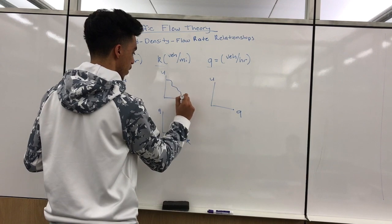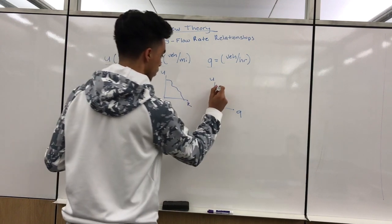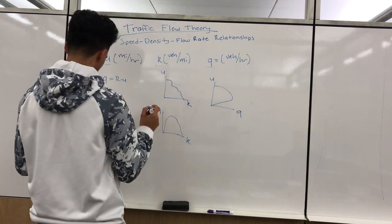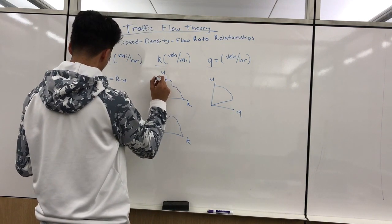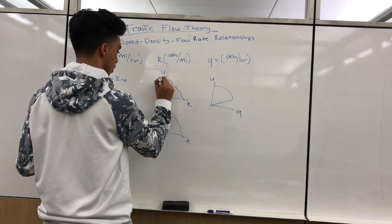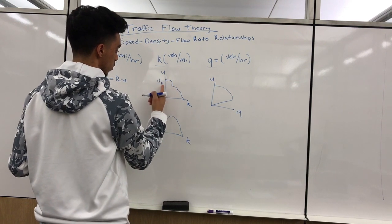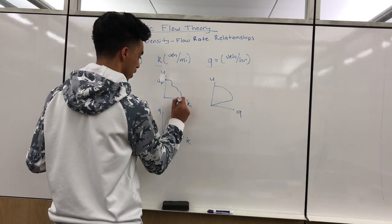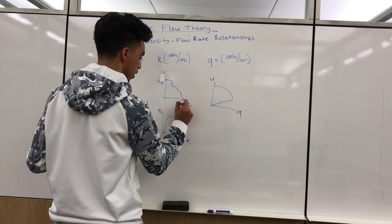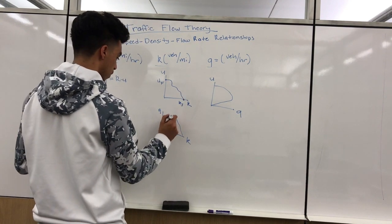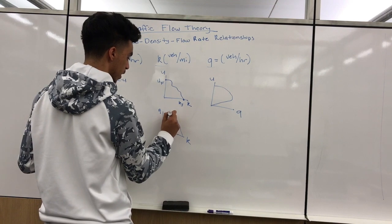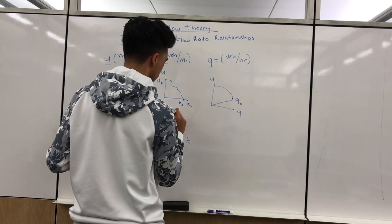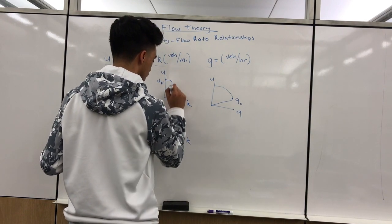These graphs come in very different shapes. Where speed is equal to zero, it's called free flow speed, defined as u sub f. Where k is equal to zero, it's defined as jam density, or k_j. Where q is maximum, it's called the capacity, q sub c. All of these are related.